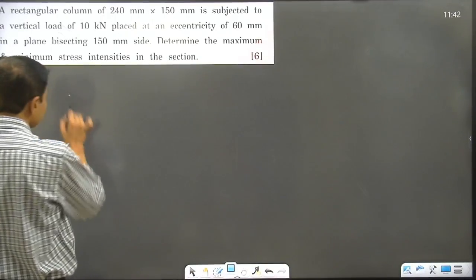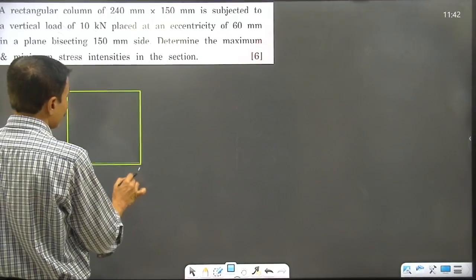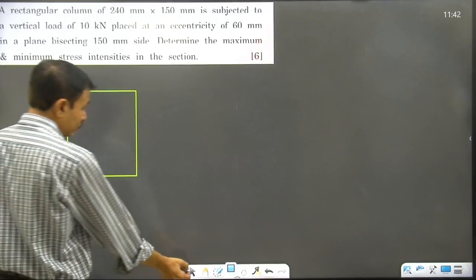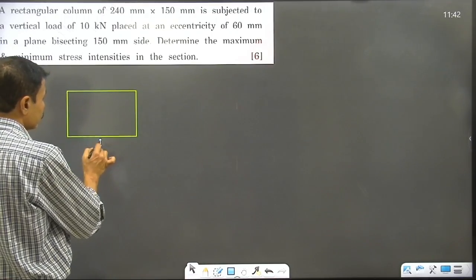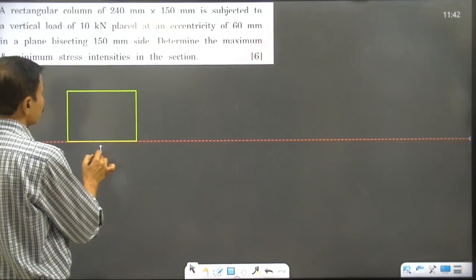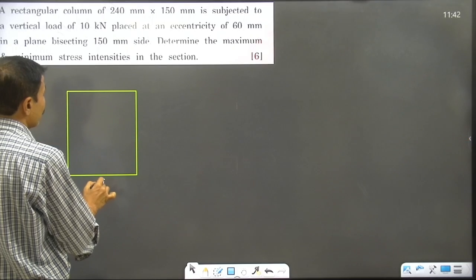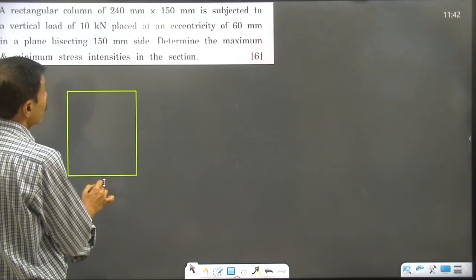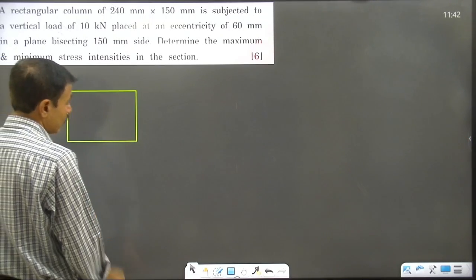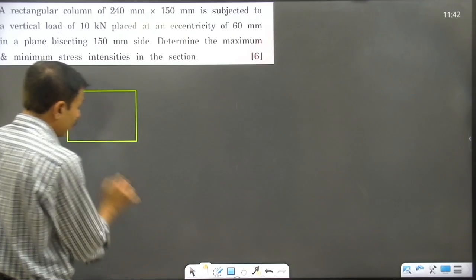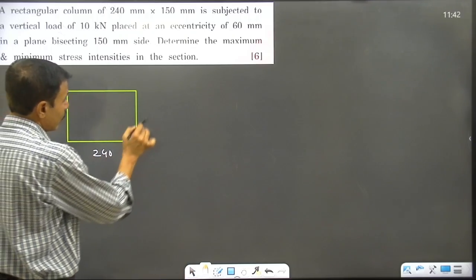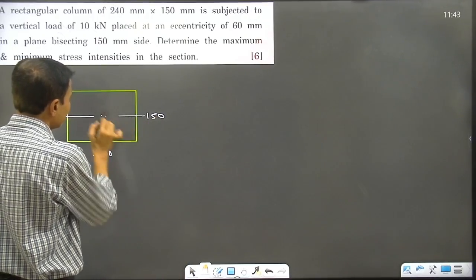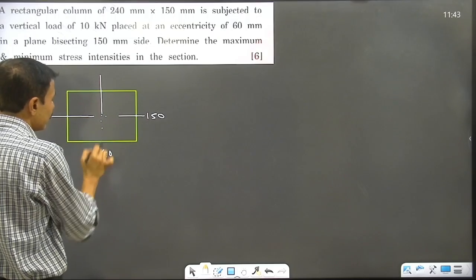Let us draw the diagram. The cross-section is 240 by 150 mm. The horizontal axis corresponds to 240 mm and the vertical axis to 150 mm. The load is applied eccentrically — you can see two points on the diagram.